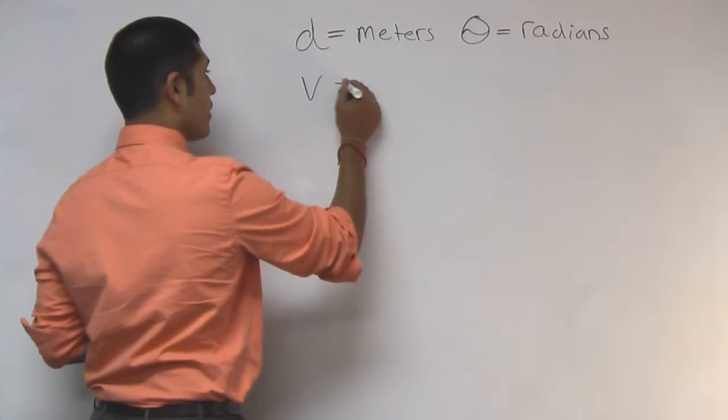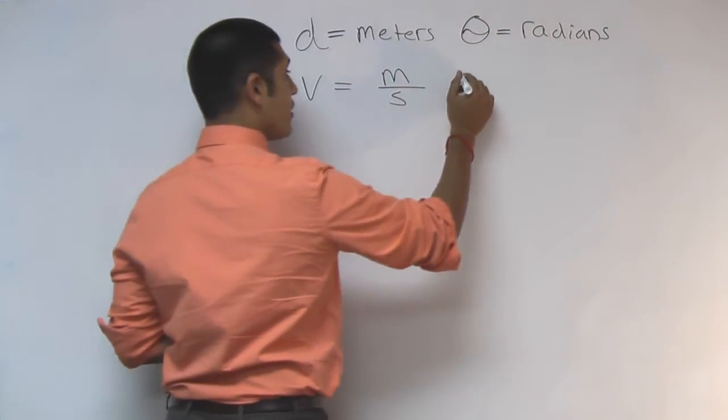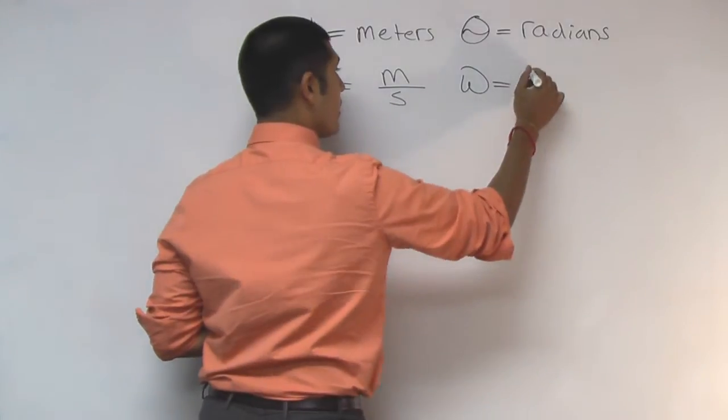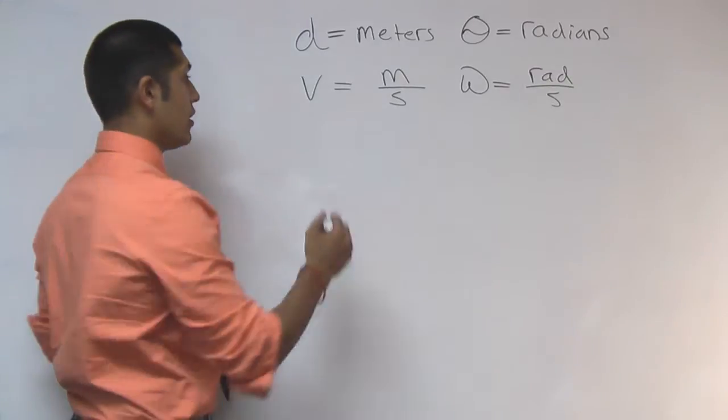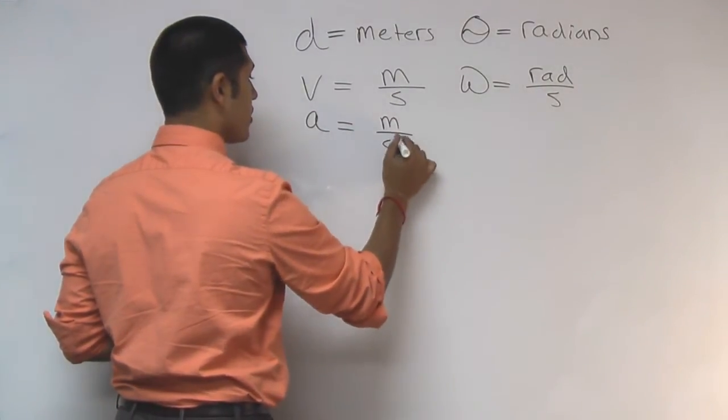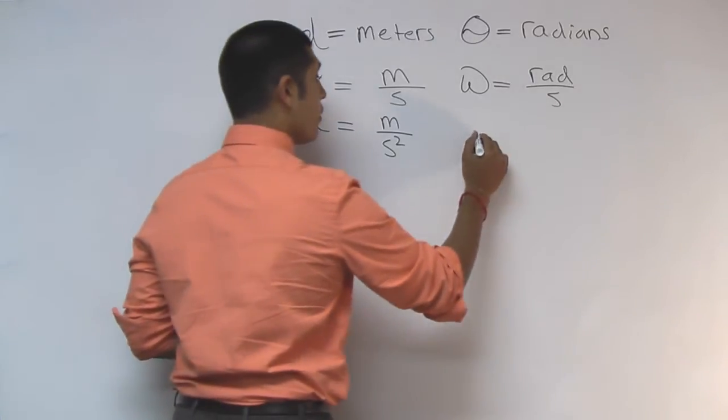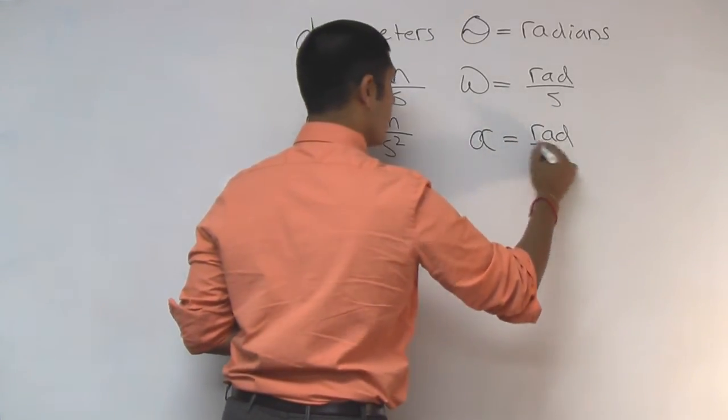Velocity is measured in meters per second, while rotational velocity, omega, is measured in radians per second. And finally, we have acceleration. Acceleration is measured in meters per second squared, while rotational acceleration, alpha, is measured in radians per second squared.